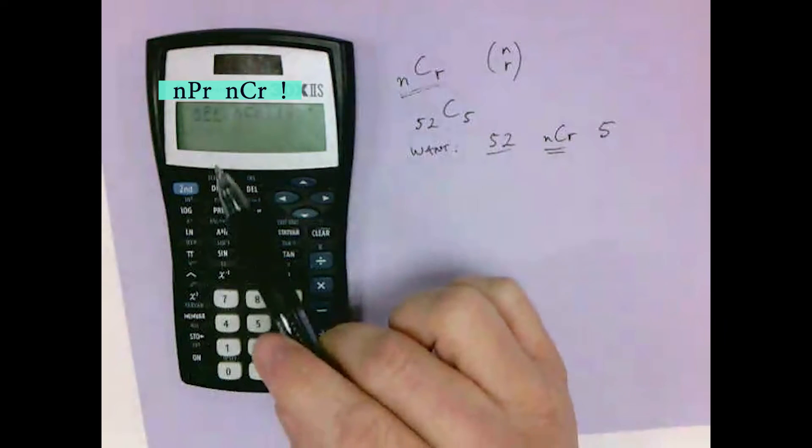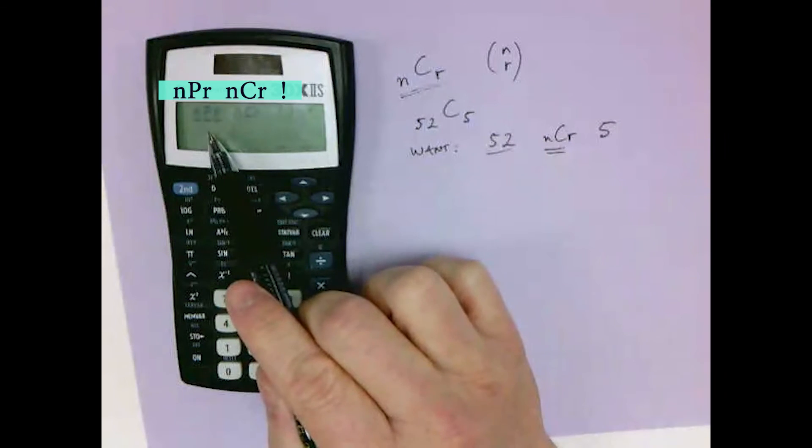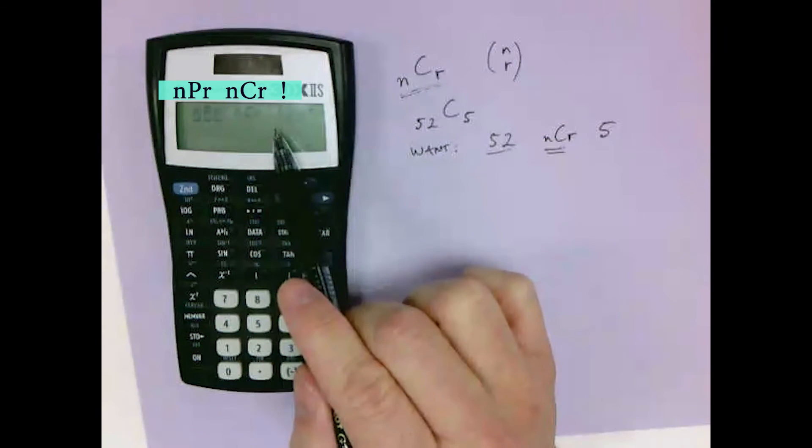Three choices will appear: NPR, NCR, and the exclamation mark for factorial.